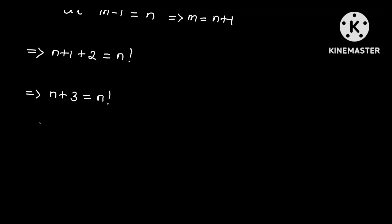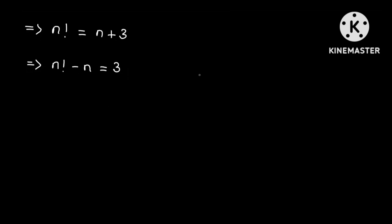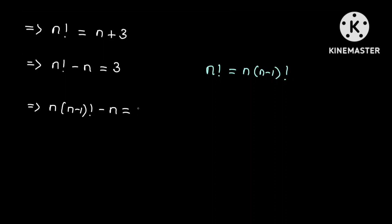Rewriting with N! on the left, we have N! = N+3. Subtracting N from both sides gives N! - N = 3. From the factorial definition, N! = N × (N-1)!, so this implies N × (N-1)! - N = 3.